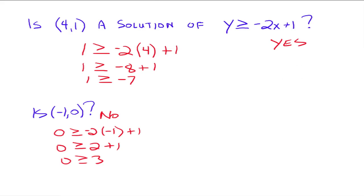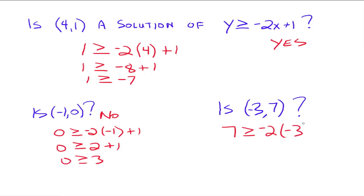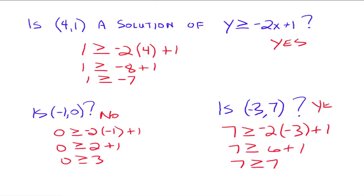Is (-3, 7) a solution? We've got 7 for Y and negative 3 for X: 7 is greater than or equal to negative 2 times negative 3 plus 1, which gives us 7 is greater than or equal to 6 plus 1, so 7 is greater than or equal to 7. Yes, 7 is equal to 7, and since it's greater than or equal to, this is a true statement. So yes, (-3, 7) is a solution.